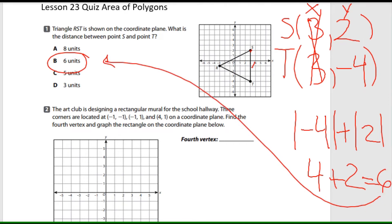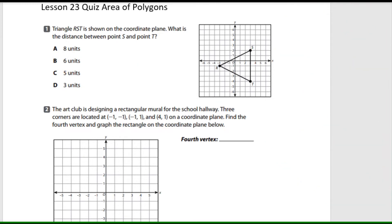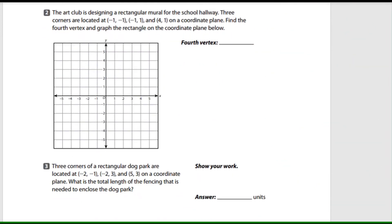Alright, let's move on to number two. That was a really good job. The art club is designed in the rectangular mural for the school hallway. Three corners are located at negative one, negative one. You could just go past those. On a coordinate plane, find the fourth vertex and graph the rectangle on the coordinate plane below.